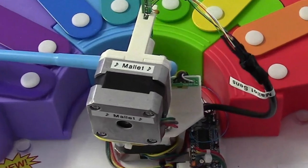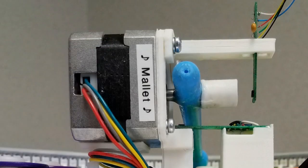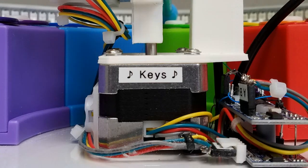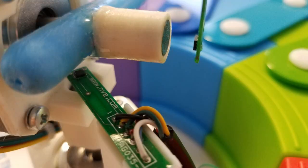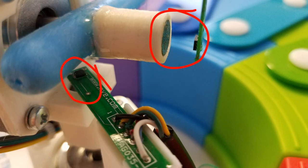We have two stepper motors, one to drive the mallet and one to move to the xylophone keys. There's an ASR002 sensor and magnet to detect the position of each motor.